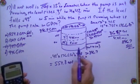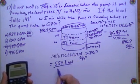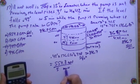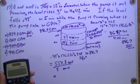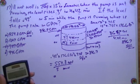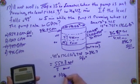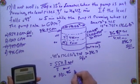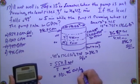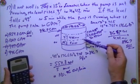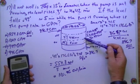But I need to get GPM. So I need to go divided by five minutes. And that's going to give me 110.96 gallons per minute. That's the equivalent of how it took to lower this.